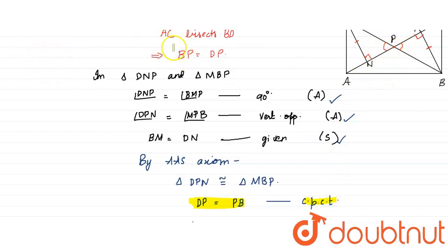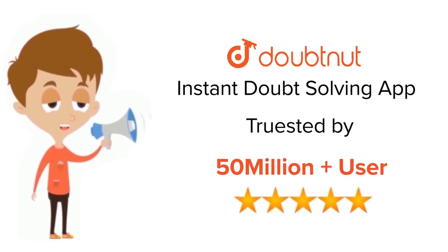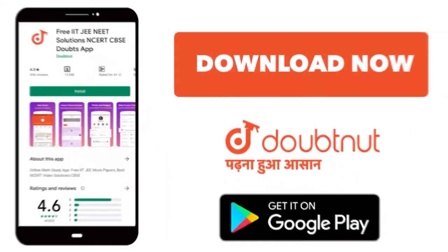Therefore, AC bisects BD. For class 6 to 12th, IIT JEE and NEET level, trusted by more than 5 crore students, download Doubtnut app today.